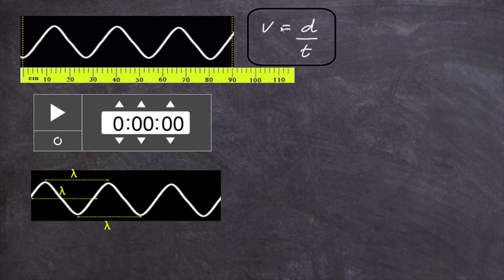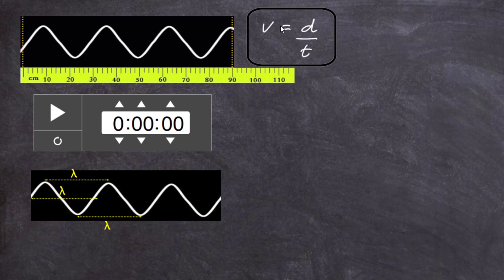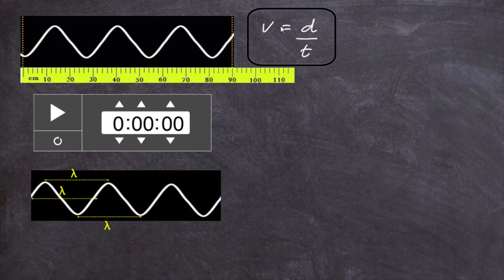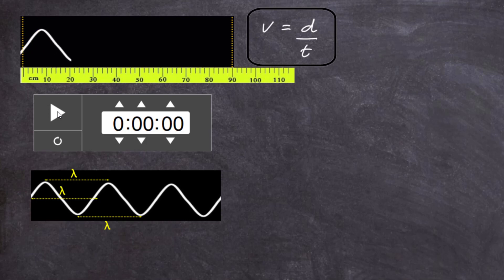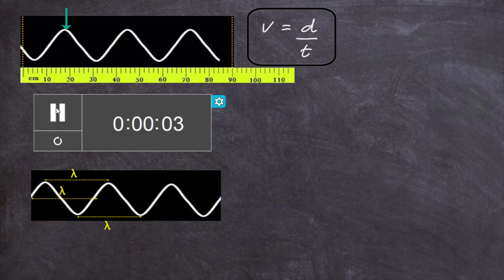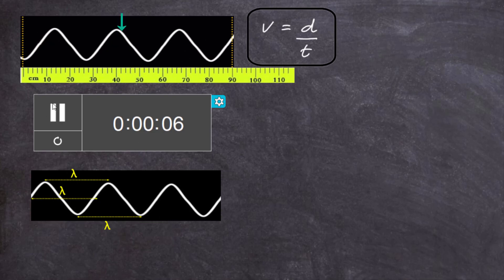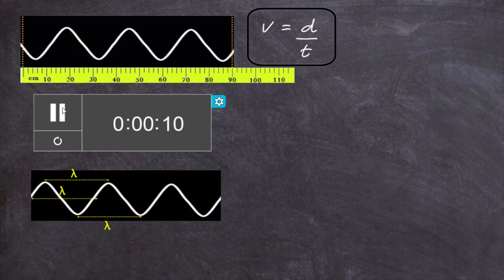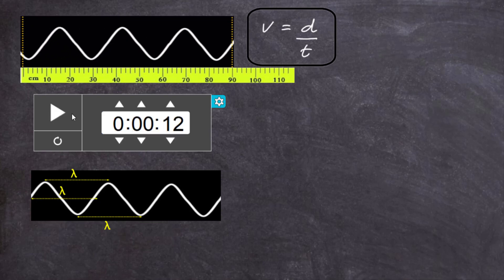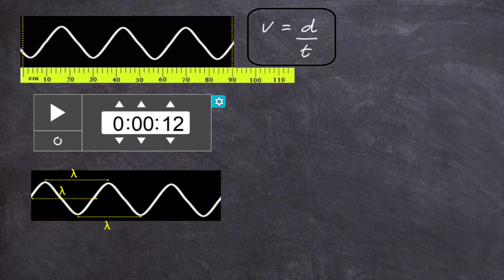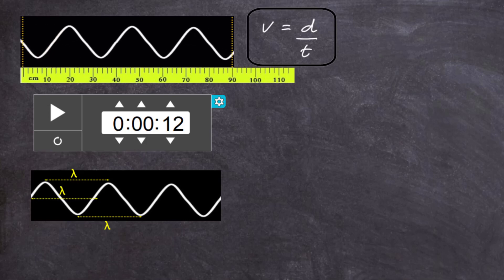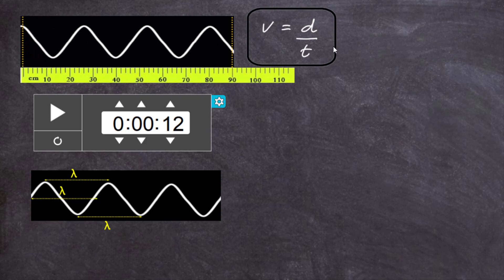The equation linking speed, distance, and time is: speed equals distance over time. The distance in this case is 90 centimeters, and we need to work out the time for one crest to move that distance. We start the stopwatch on the next crest as it passes the line, watch it move along, and stop it when that wave crest touches the yellow line. The time taken for the crest to travel 90 centimeters is 12 seconds.